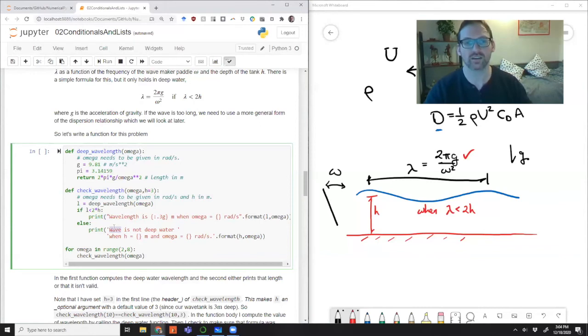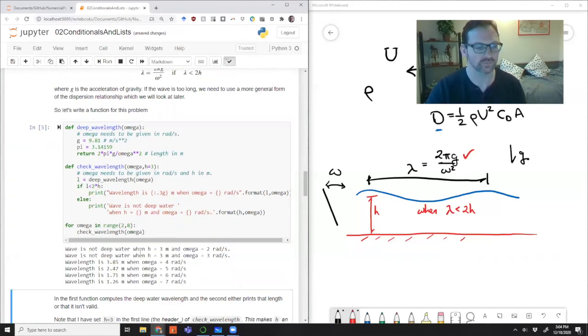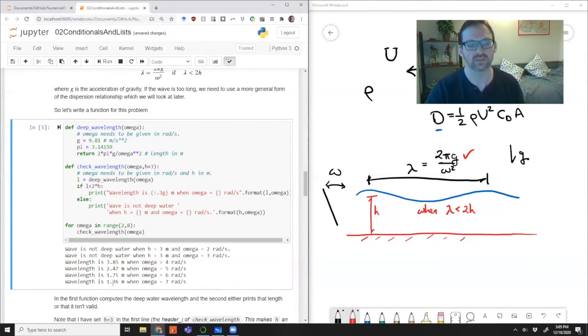If it's not true, however, we'll say can't do it. Wave is not deep water. And we'll do this for a range of values. So here I'm switching from two up to eight in increments of one. And we can see the results. So wave is not deep water when h equals three meters, and omega is two radians per second. Also not for omega is three radians per second. But as we increase omega four, five, six, seven, then I'm able to use this deep water relationship. And so I get wavelengths of 3.85 and so on down to 1.26 meters.